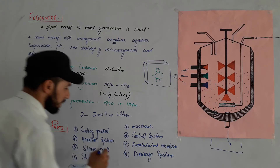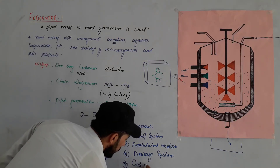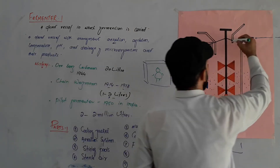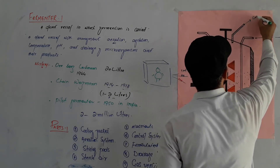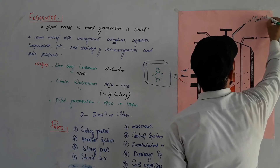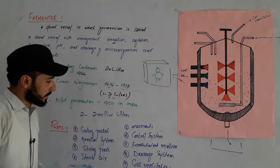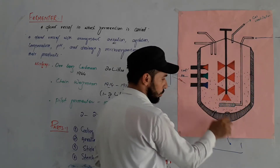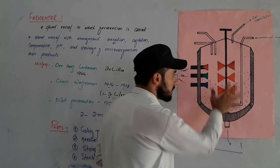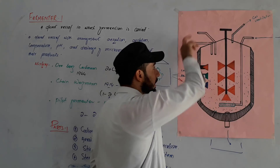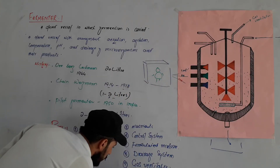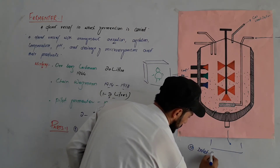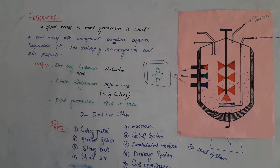Number eight is the drainage system — it is used to drain the product out of the fermenter once it is ready. Number nine is the gas ventilator — gases produced during fermentation are released through the gas ventilator. This allows gases to exit the system.